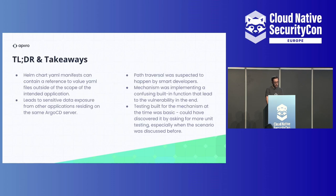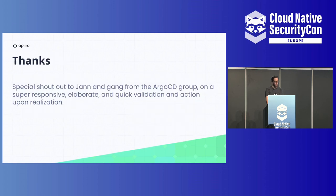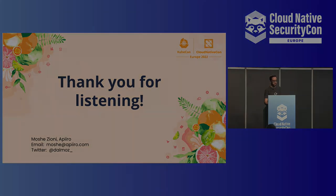In summary: a Helm chart YAML manifest containing malicious fields can lead to secrets being revealed on multi-user systems, and sensitive data can be exposed. The path traversal was suspected and the developers were aware. The big takeaway is the need for community-driven security testing. Special thanks to the Argo CD folks — this was the fastest, most professional CVE disclosure engagement I've had in years. Thank you to the organizers for having me on stage, and thank you all for listening.